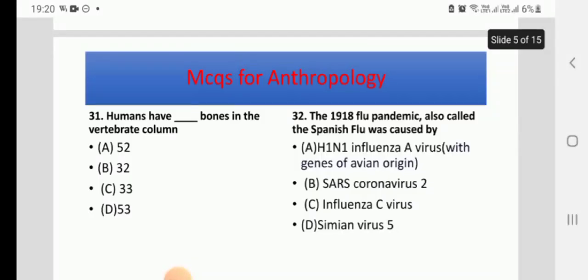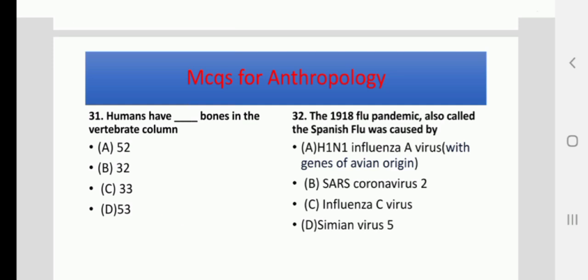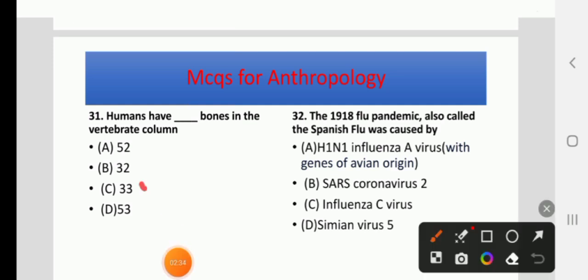Humans have how many bones in the vertebral column? The right answer is 33 vertebrae.